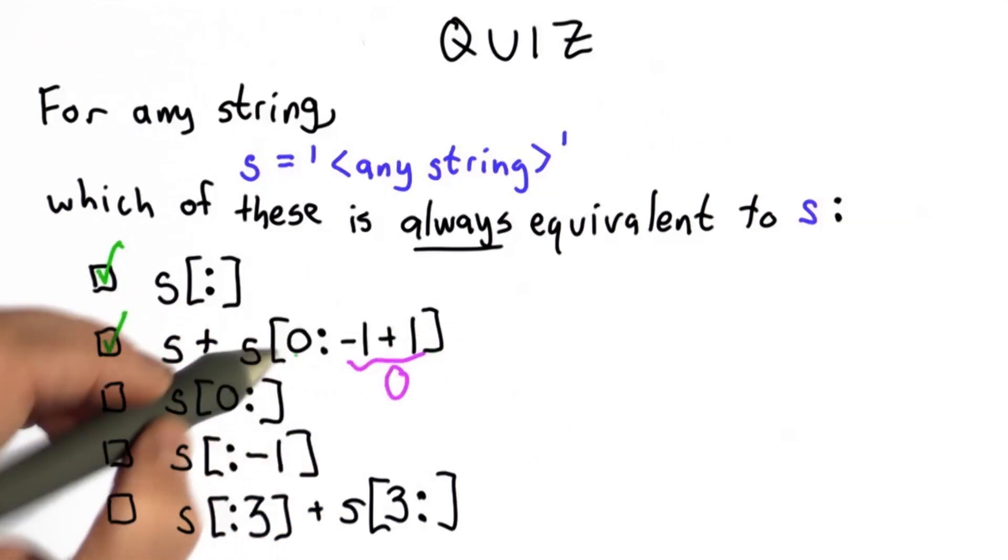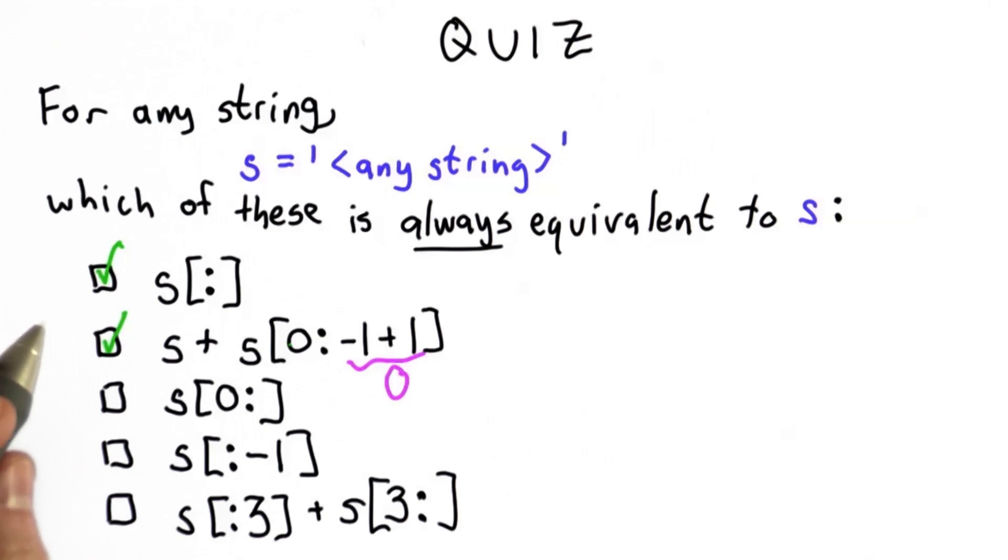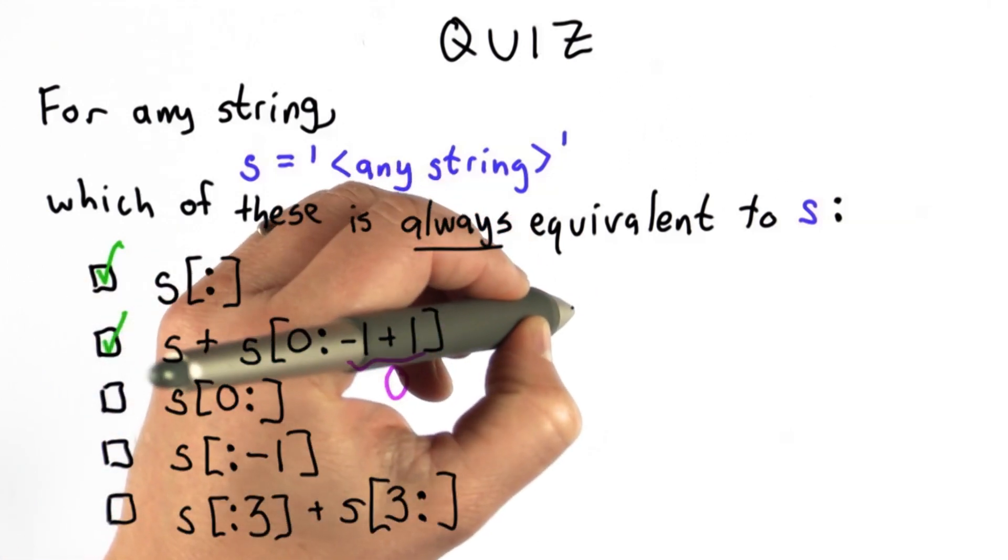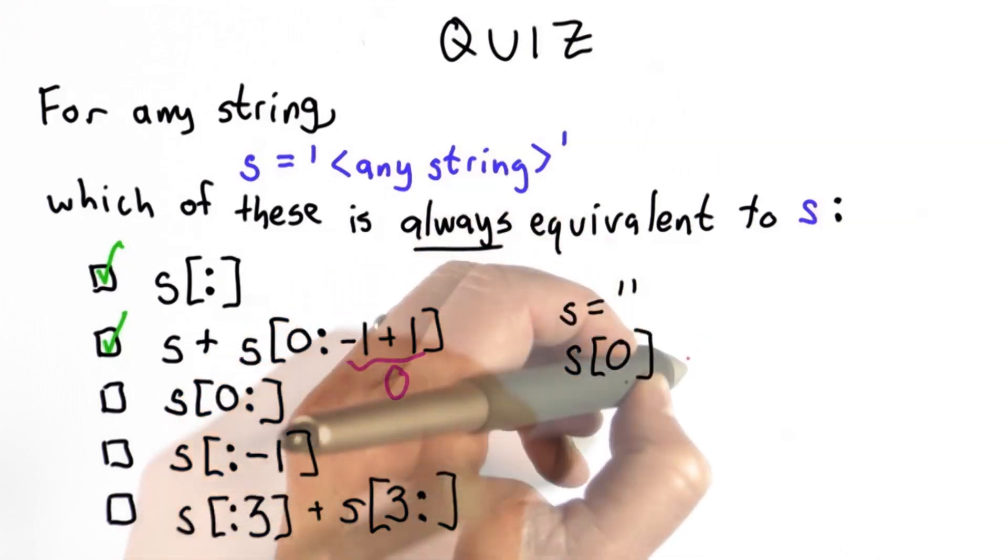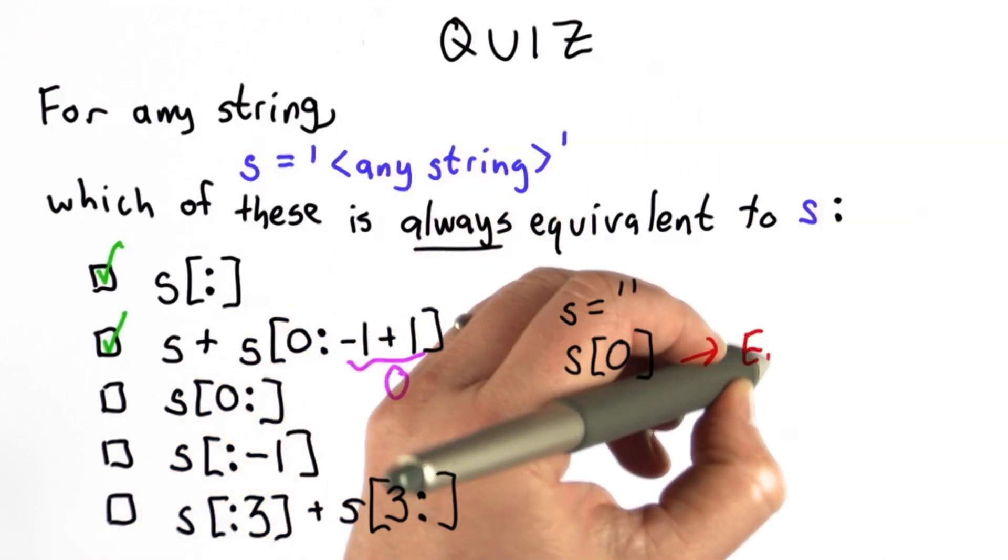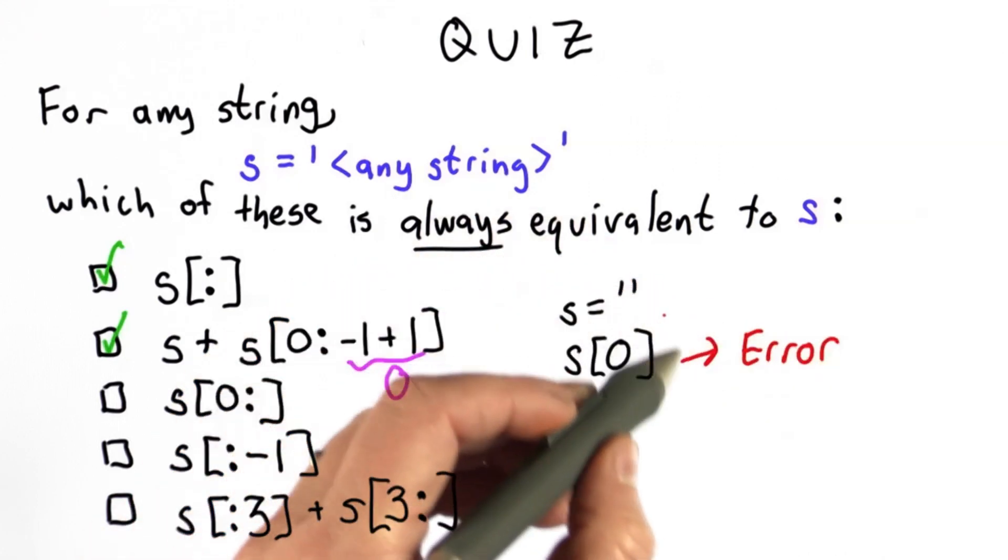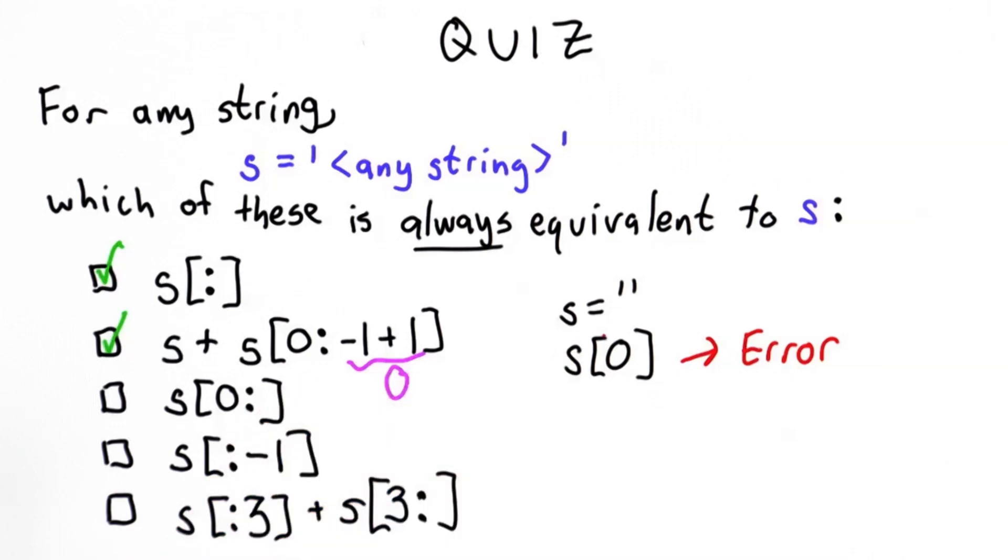The interesting thing about this is it works even when s is an empty string. If s was an empty string, s[0] would produce an error. It's trying to select the first character from s, and there's no first character since s was an empty string.